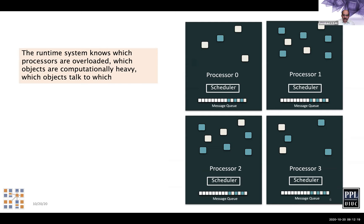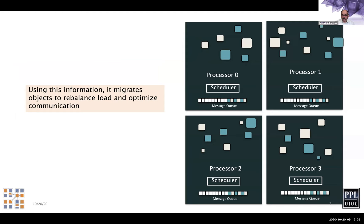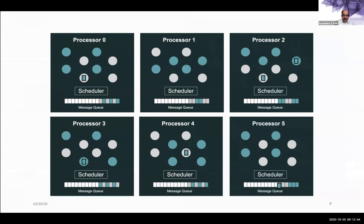The runtime system knows which objects are heavy or light and who is talking to whom. Using this information it can migrate objects around to accomplish things like load balancing, and shrinking or expanding the set of nodes used by the simulation. This is where you get most of the flexibility.